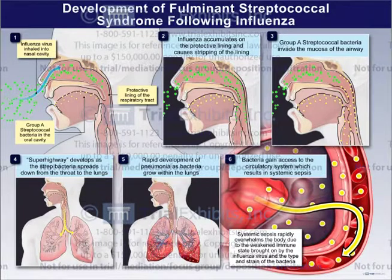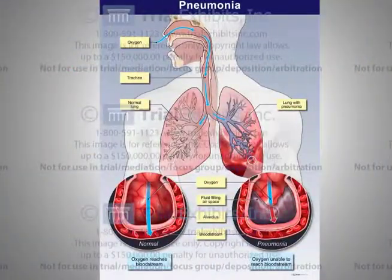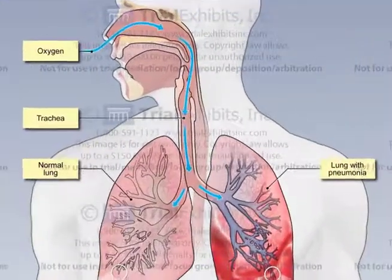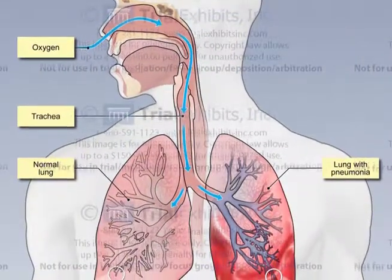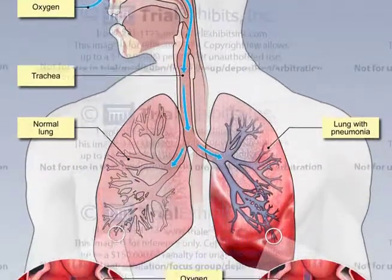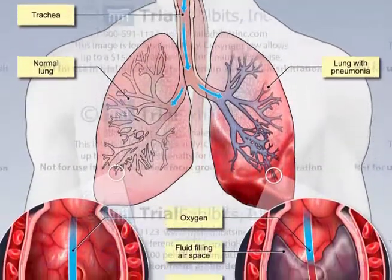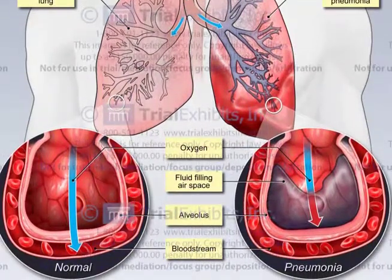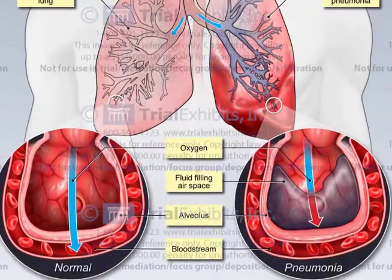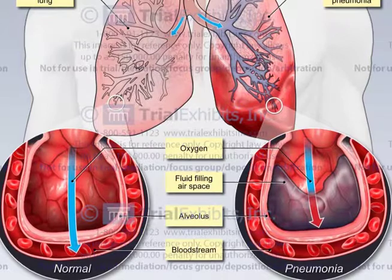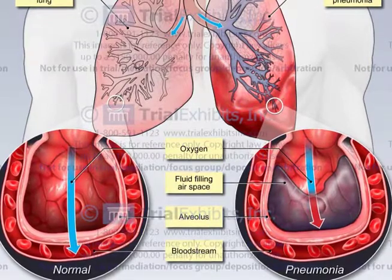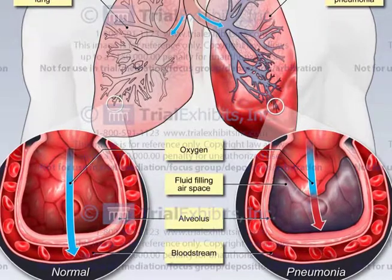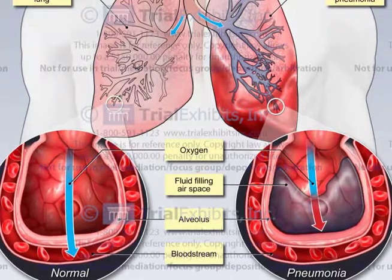First, we had to explain pneumonia to the jury. A medical illustration was created that provided an overall depiction of the respiratory system, offering a view into the terminal alveolus where gas exchange occurs. Utilizing two views of these air pockets at the end of the airway, we could show the normal flow of oxygen across the membranes into the surrounding vasculature, as compared to an alveolus in the pneumonia patient with fluid filling the alveolus, preventing the flow of oxygen into the blood.